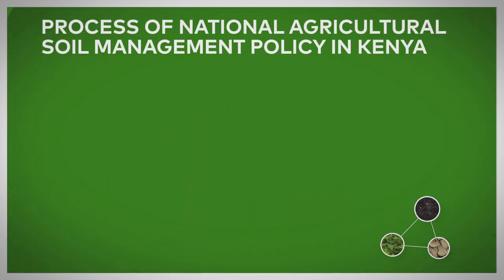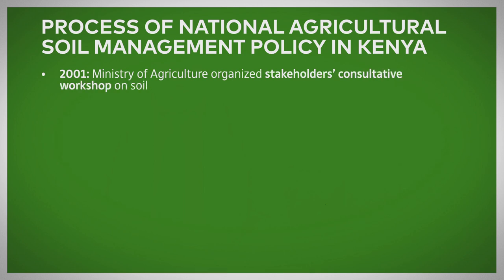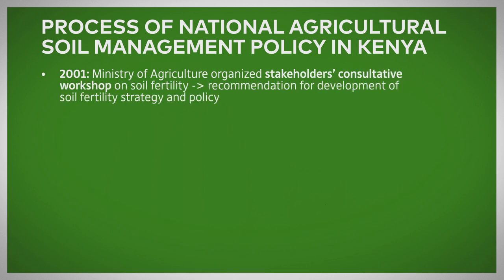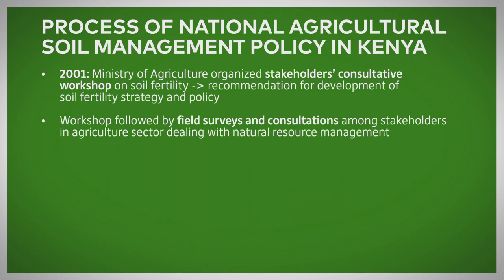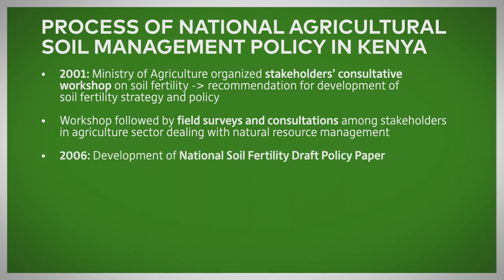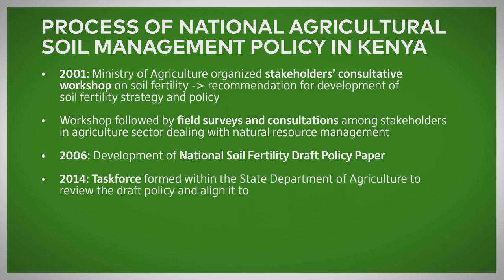Le processus de développement de la politique nationale de gestion des sols agricoles commença en 2001, lorsque les parties prenantes se réunirent pour voir quels étaient les problèmes. À cette époque, ils soulignèrent la nécessité de mettre en place une stratégie pour traiter les problèmes de gestion des sols. En 2006, un projet de texte politique fut mis en place pour traiter les problèmes de fertilité des sols. En 2014, un groupe de travail fut à nouveau mis en place pour préparer ce projet de texte de manière à ce qu'il inclut les enjeux liés à la constitution.